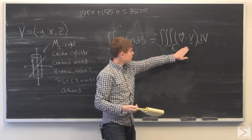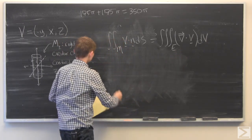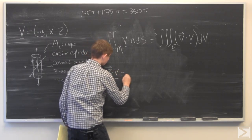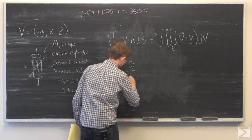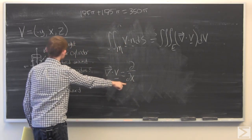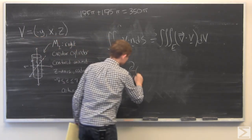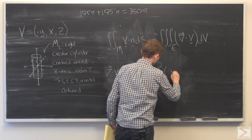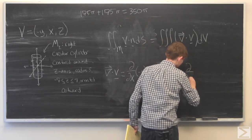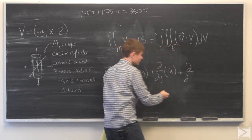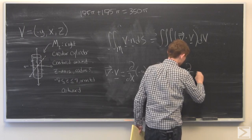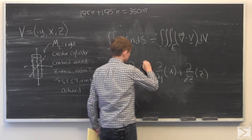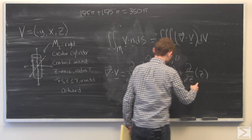Okay. And so now we need to calculate this. So we have d dx of negative y plus d dy of x plus, or these are partials obviously, partial over partial z of z. And so this is 0, this is 0, this is 1.